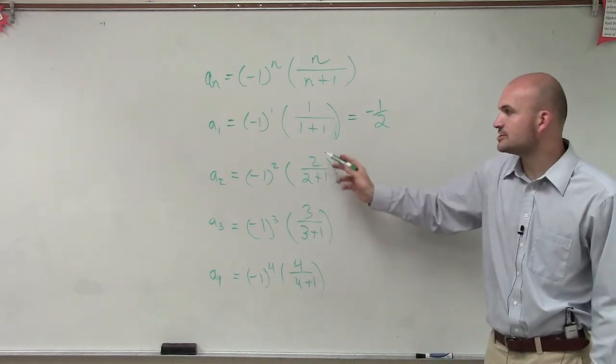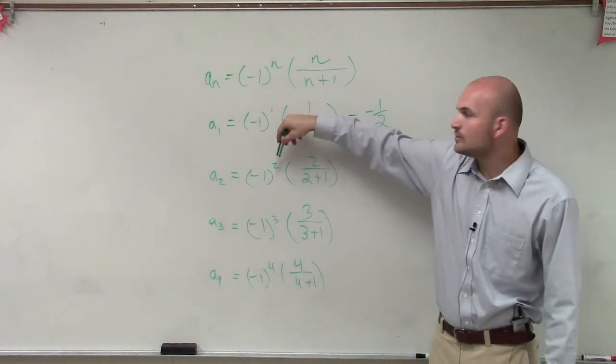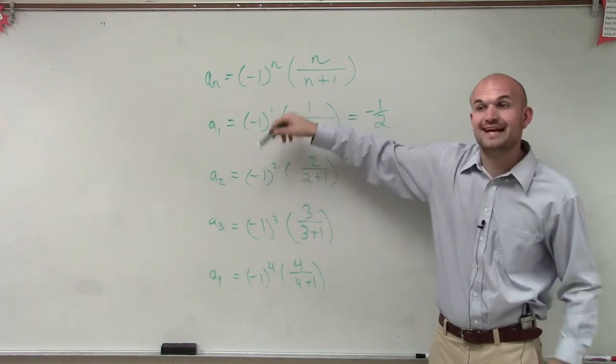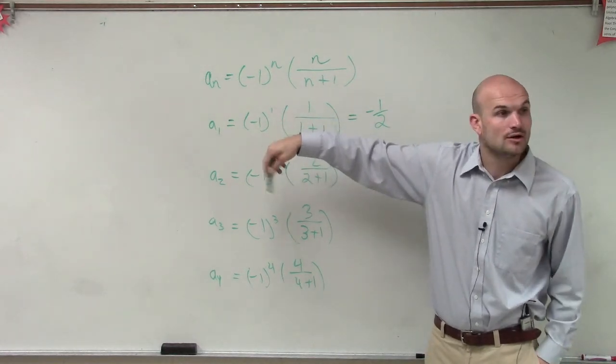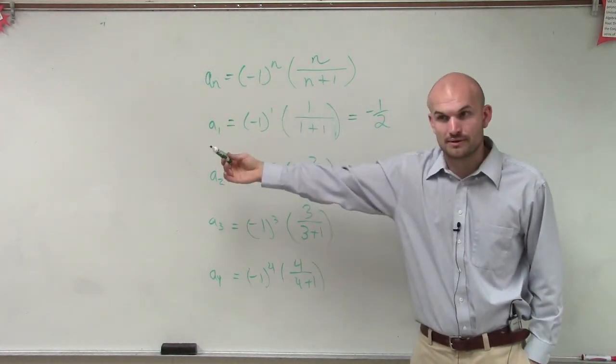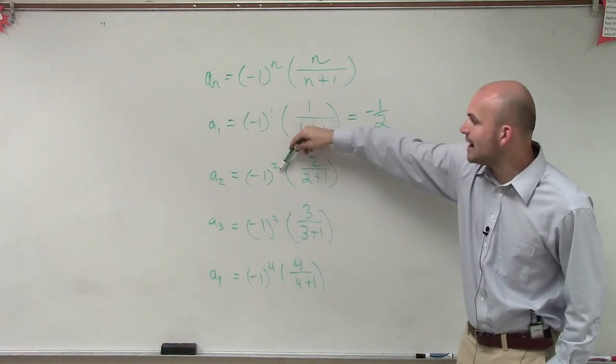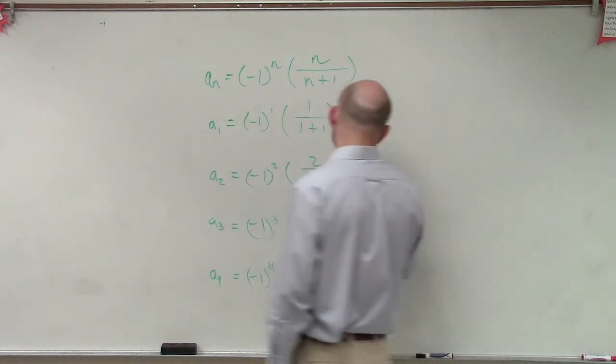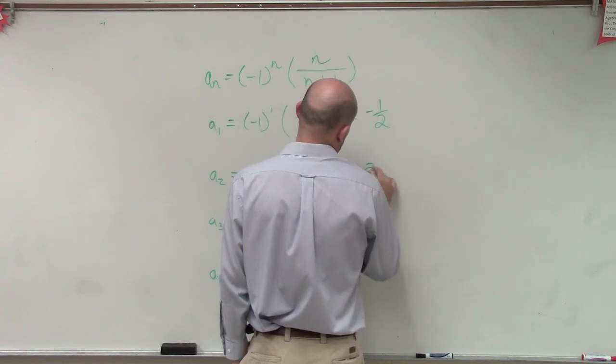Over here, my fraction is 2 thirds. But now, notice negative 1 squared is negative 1 times negative 1, right, which is now positive 1. So therefore, it's going to be positive 1 times 2 thirds, which just equals 2 thirds.